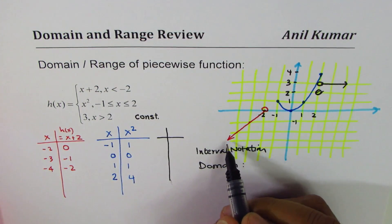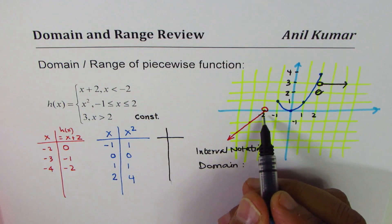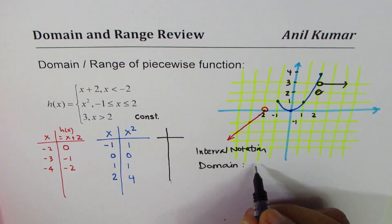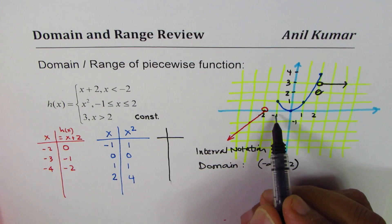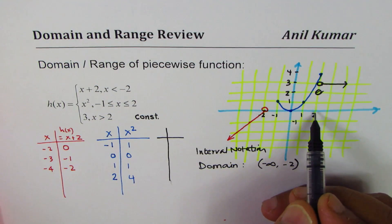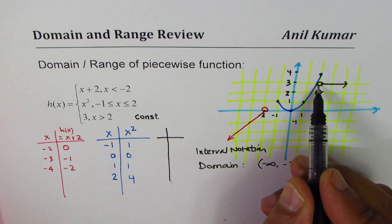So we see that the left piece is from minus infinity to minus 2, where 2 is not included. So we could write this as domain is from minus infinity to minus 2, 2 is not included. And then the second piece is from minus 1 to 2, both included. Third is from 2 to infinity.